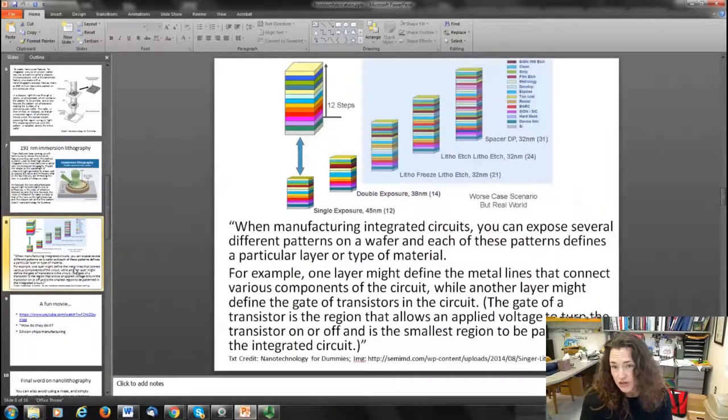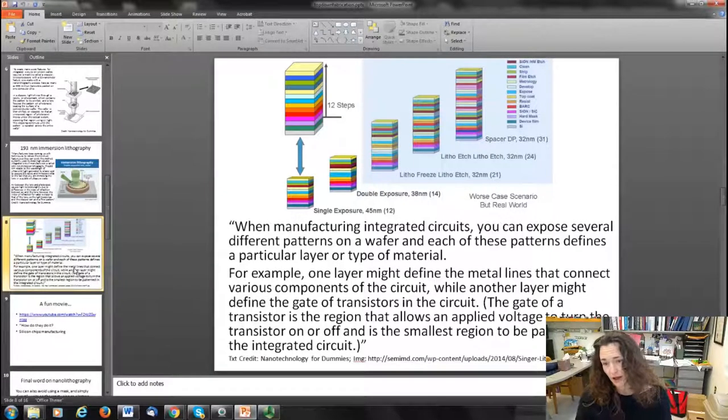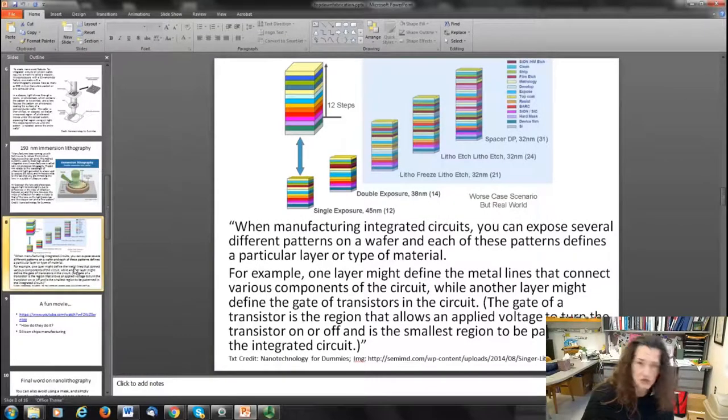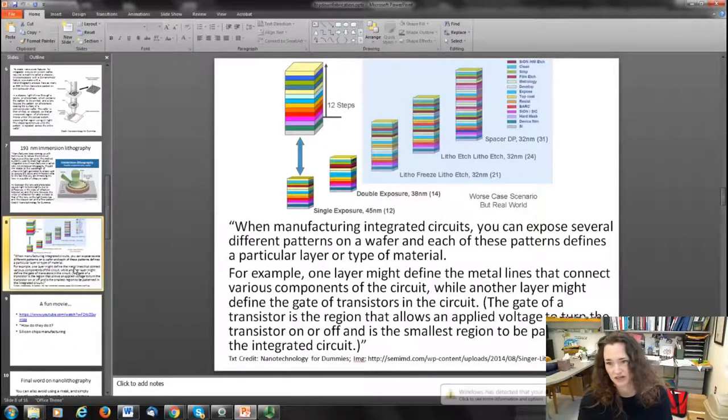When manufacturing integrated circuits, you actually expose several different patterns on a wafer, and each of those patterns defines a particular layer or type of material. For example, one layer might define metal lines that connect various components of the circuit, while another layer might define the gates of the transistors. You have to take it through multiple layers to get the complex integrated circuits in our computers and cell phones.